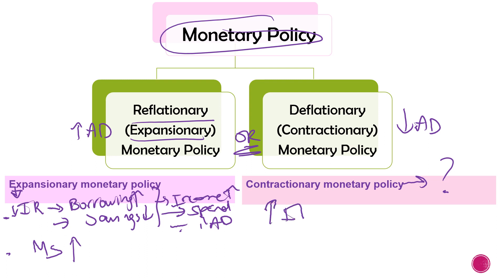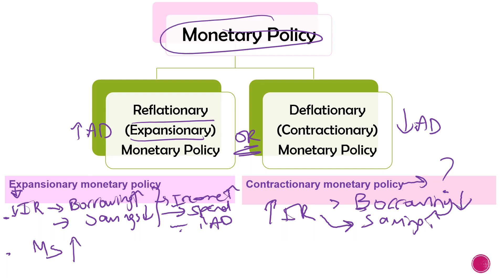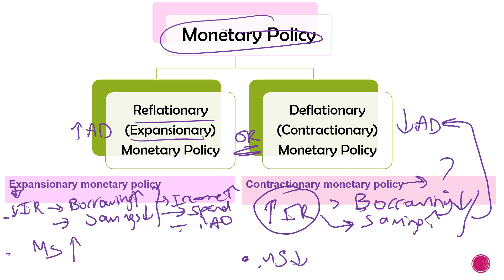When the government uses a contractionary monetary policy, they need to increase the interest rate. Borrowing will decrease because people would have to pay more on their loans, and they would be saving more to receive a higher interest rate. Most of the money is therefore saved, leaving us with less income, which leads to a decrease in aggregate demand. Also, the government could decrease the money supply — when there is less money in an economy, people spend less and aggregate demand decreases.